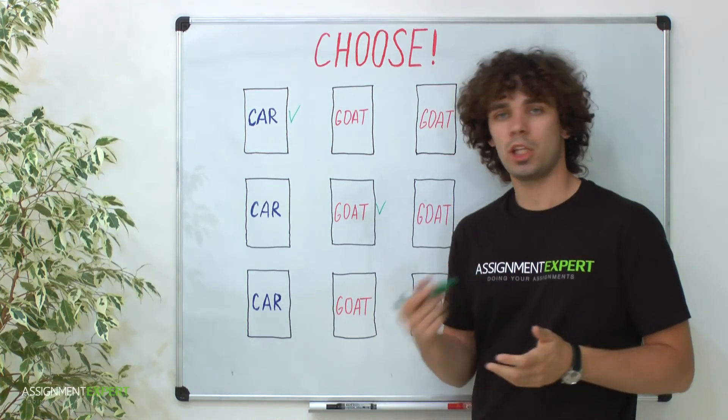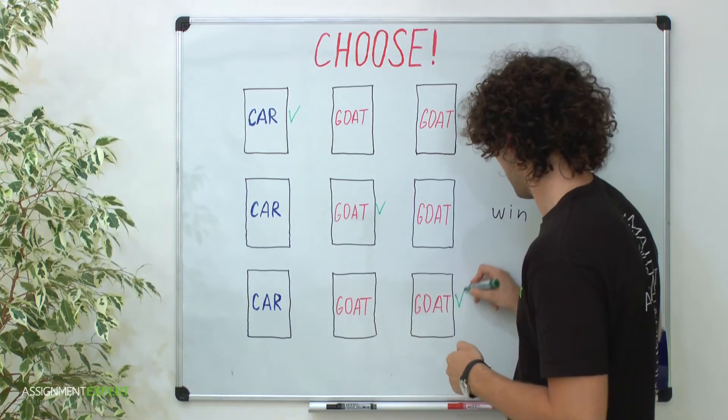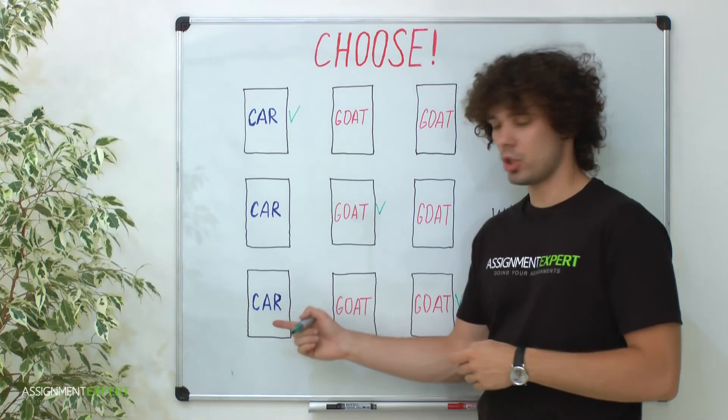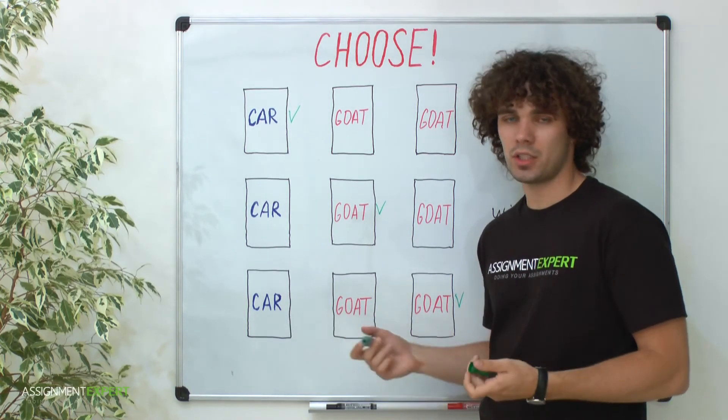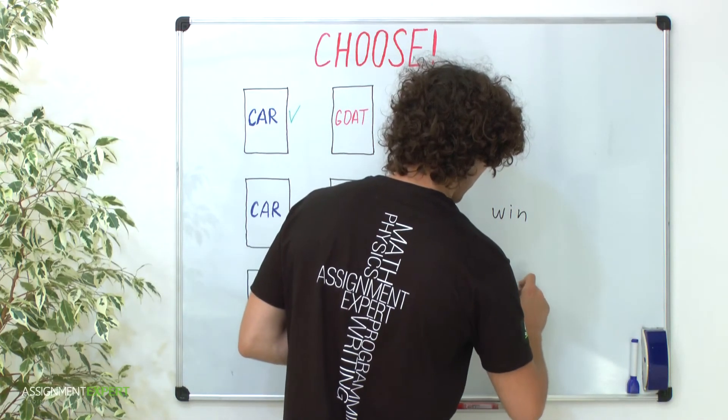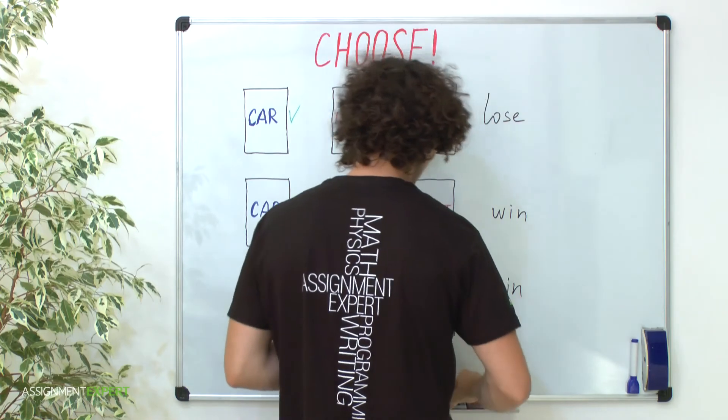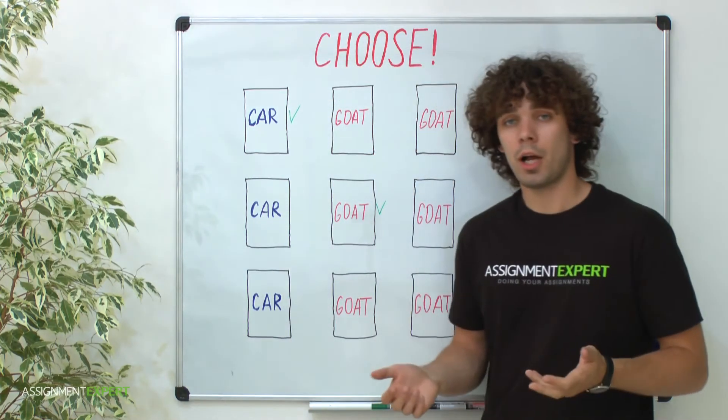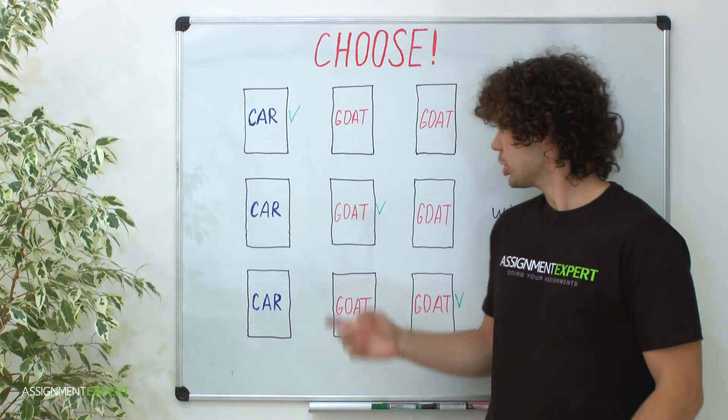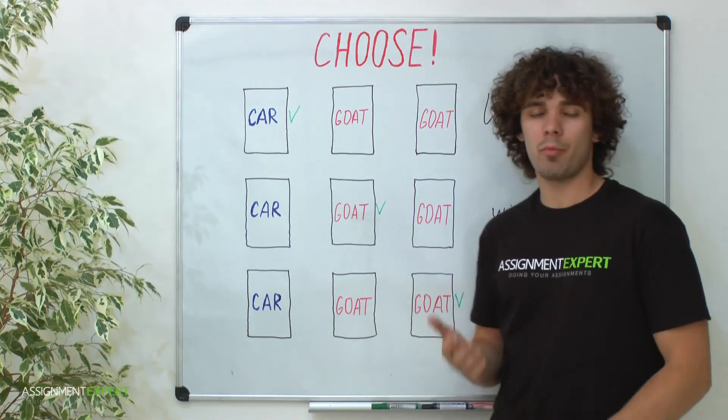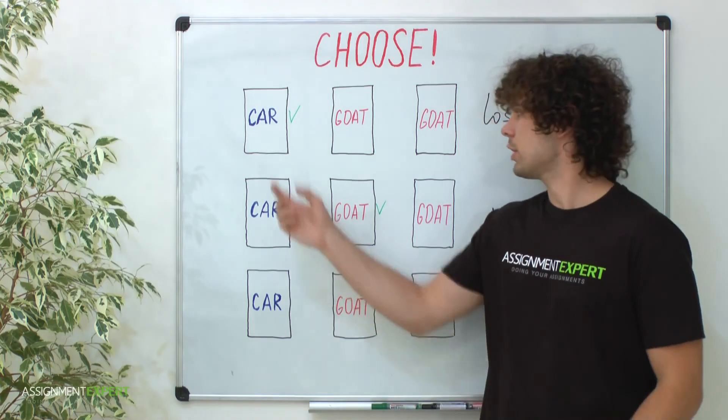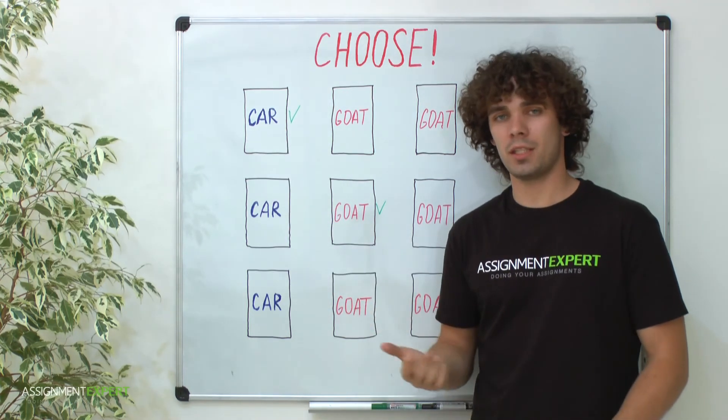And the same situation if you initially pick goat two. Then I will show you where goat one is. You will change the door and get a car, so this is another win. Summing up, we win two times out of three when we change the door. That's because we win when we initially pick a goat. And the probability of this event is two-thirds. And we lose only if we initially pick a car. The probability of this event is one-third.